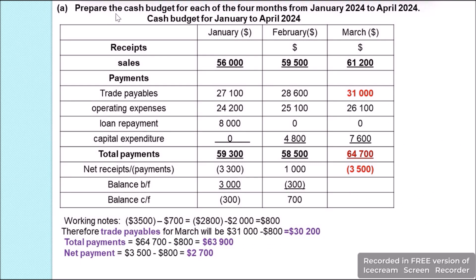We are asked to prepare the cash budget for each of the four months from January 2024 to April 2024. We will make the cash budget on a monthly basis and make adjustments wherever and whenever they are required.